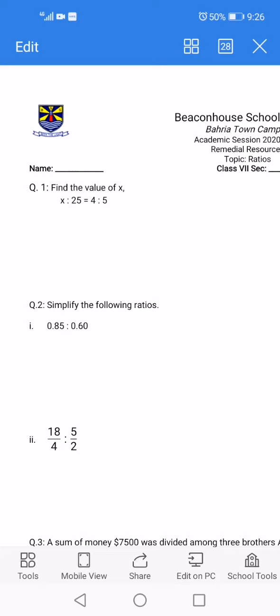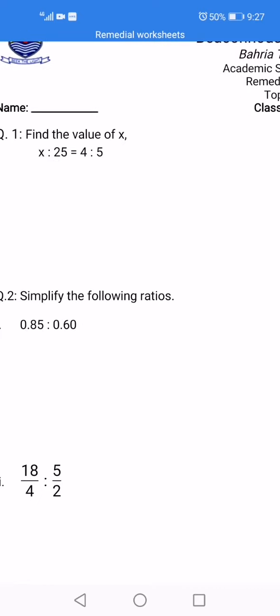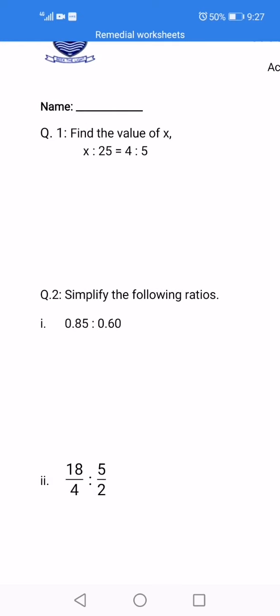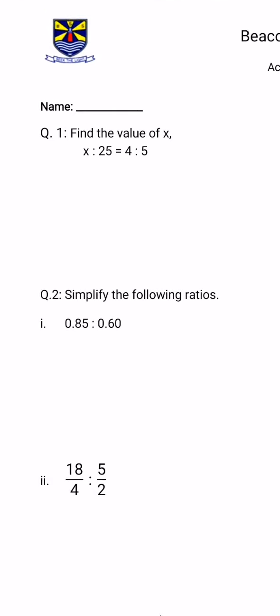Now look at question number 2. Once again it is a ratio of two decimal numbers, 0.85 ratio 0.60. We have to simplify this ratio. What we will do here is multiply both ratios by 100 so that we will get 85 ratio 60, and then we will simplify it. We know that both are divisible by 5, so we will continue cancelling both the ratios by 5.